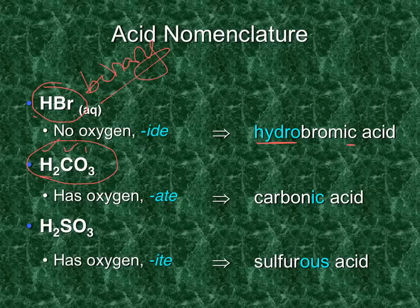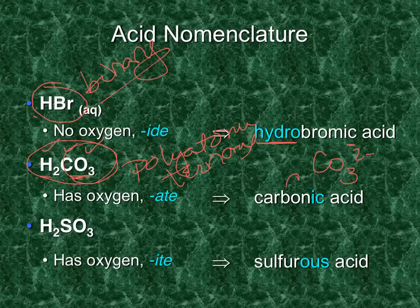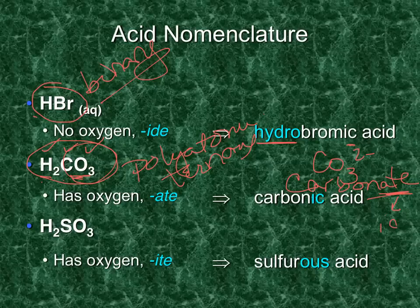This acid has three different elements — hydrogen, carbon, and oxygen — so it is ternary, which means we need to decide whether the polyatomic ends in '-ate' or '-ite'. You may need to look at your polyatomic naming list. CO3 is called carbonate, and since that polyatomic ends in '-ate' — 'he ate ick' — the acid ends in '-ic': carbonic acid.